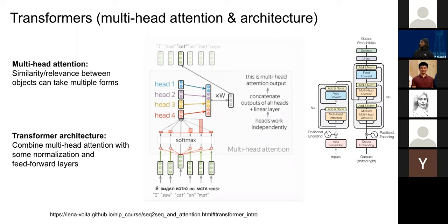This allows words to be related to each other in up to as many ways as there are attention heads. Usually we do this by splitting the representation into different pieces so we're not increasing the model size — we just use a different attention score for different sections of the token embedding. The transformer architecture combines multi-head attention with normalization and feed-forward layers.